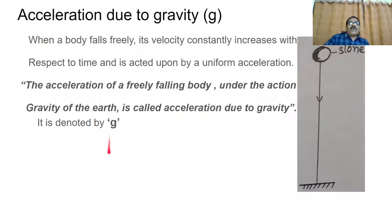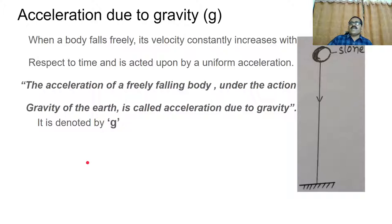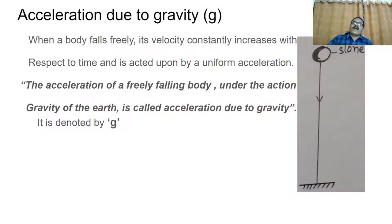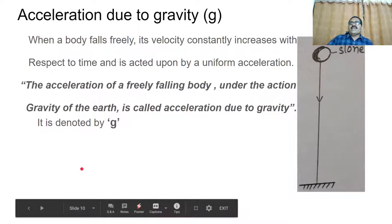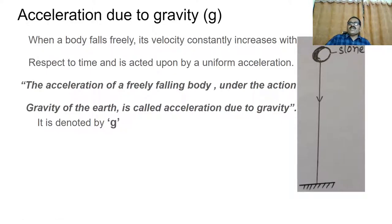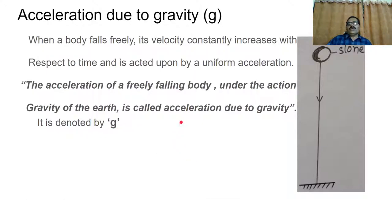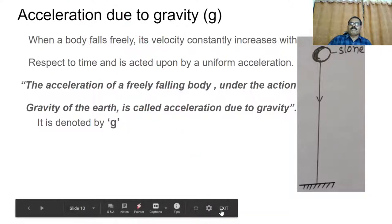So, what we discussed today: distance, displacement, speed, velocity, and acceleration. Based on these terms, we are going to discuss the equations of motion next. The equations of motion are four types: V = U + AT; V² − U² = 2AS; S = UT + ½AT²; and the distance travelled in the nth second, Sₙ = U + A(N − ½). We shall derive these equations in the next session. Thank you all for giving this opportunity.